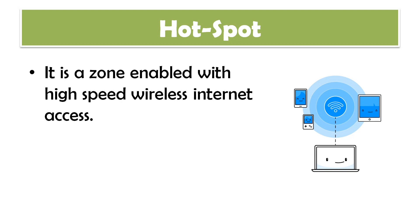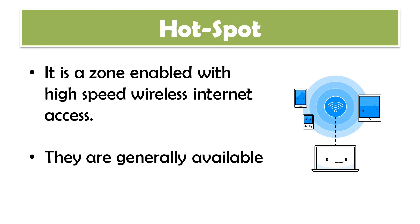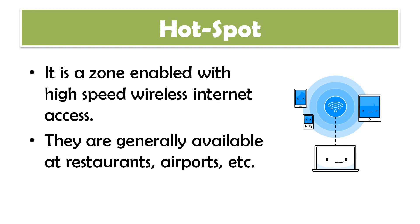Next is hotspot. A hotspot is a zone which is enabled with high-speed wireless internet access. You can make a Wi-Fi area — a kind of zone — where you can access the internet wirelessly, and that area is called a hotspot. For example, you use hotspots in the airport or in restaurants where a free Wi-Fi facility is available — so that is actually a hotspot from which you can access the internet.